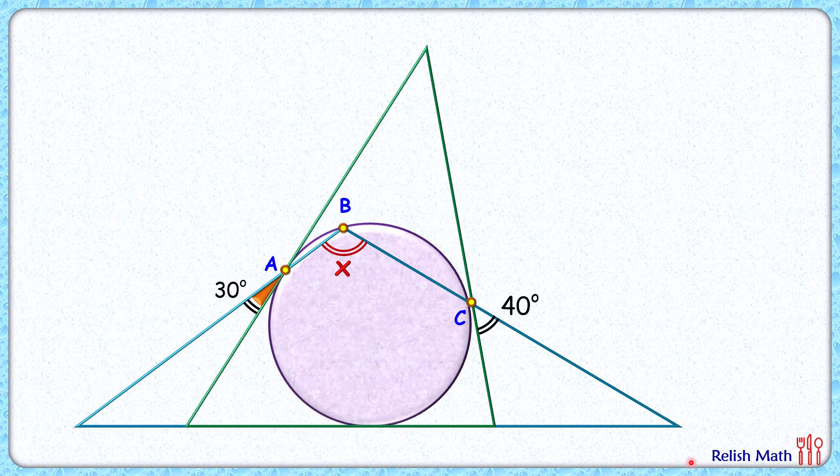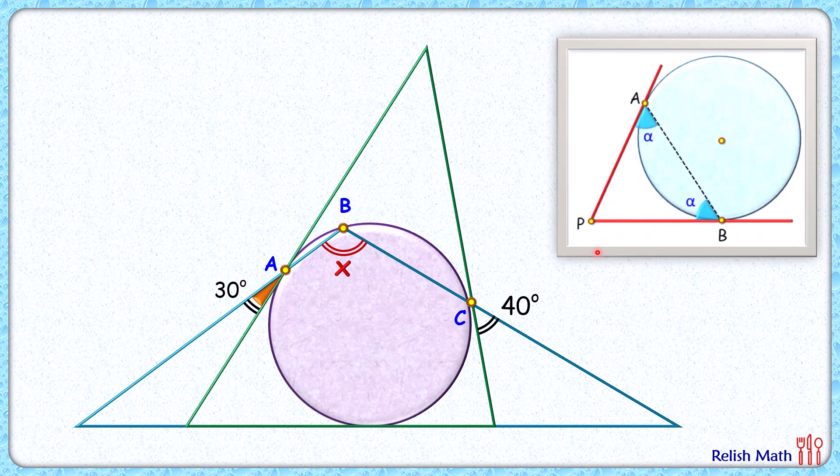Well, the solution is very simple and yet elegant. Here to solve, we'll use a simple theorem that from an external point when we draw two tangents, these tangents are of equal length. Thus the triangle PAB is an isosceles triangle and these angles will be equal. So we'll be using this fact that the angles made by the tangent will be equal.